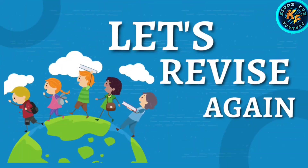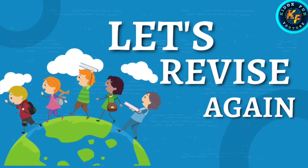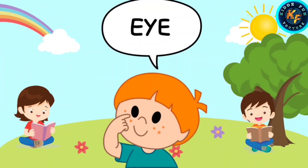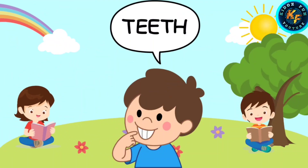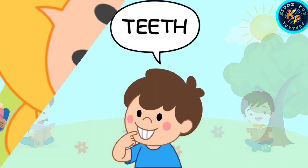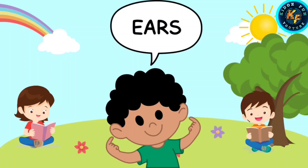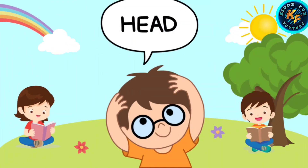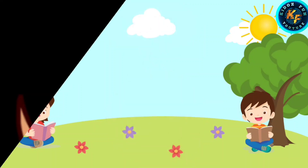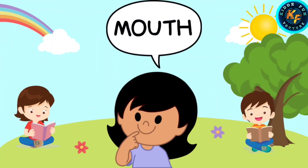Let's revise again. Eyes — E-Y-E-S. Teeth — T-E-E-T-H, teeth. Nose, nose. Ears, ears. Head, head. Mouth, mouth.